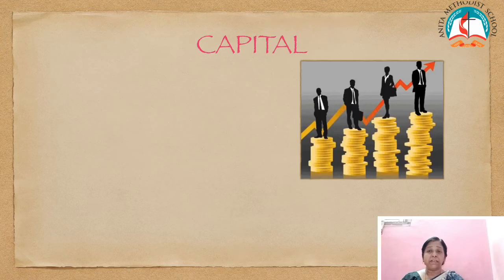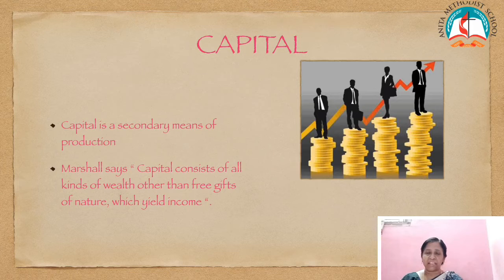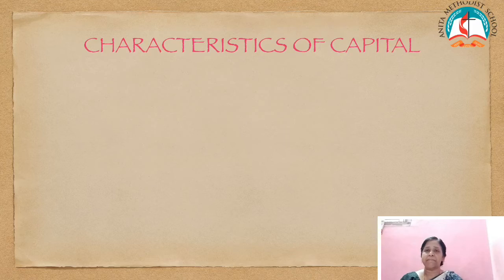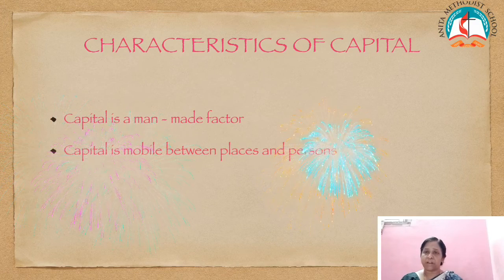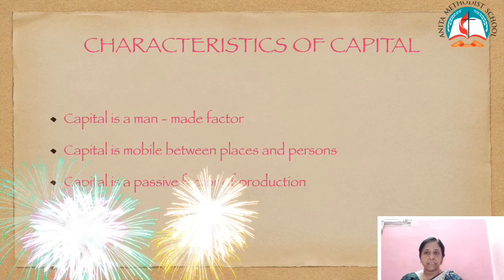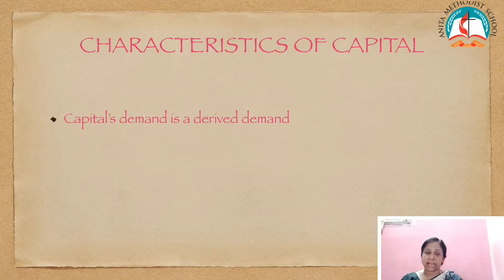Capital is a secondary means of production. According to Marshall, capital consists of all kinds of wealth other than the free gift of nature which yields an income. In other words, capital refers to that part of savings that can be used for investment for further production. Characteristics of capital: capital is a man-made factor. Capital is mobile between places and persons — it can be moved from one place to another and from one person to another. Capital is a passive factor; it is not active. Capital supply is elastic — it is flexible. Capital's demand is a derived demand, meaning it is the demand for a good or service that results from the demand of a different or related good or service.